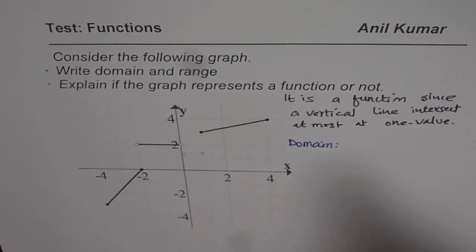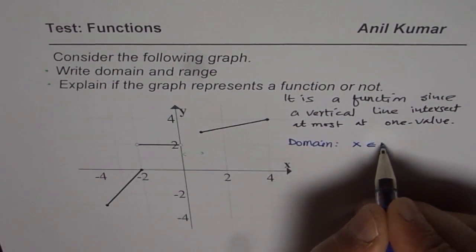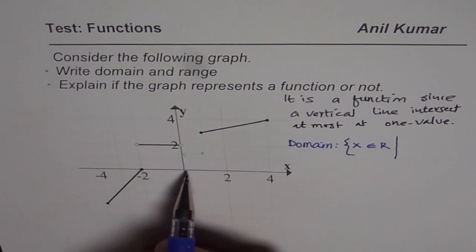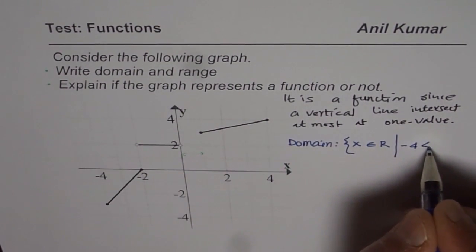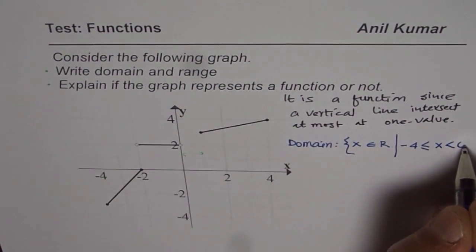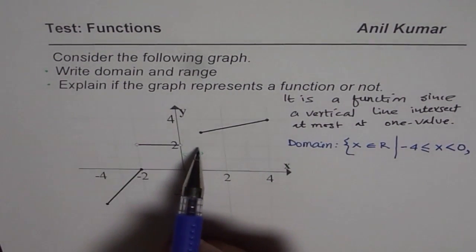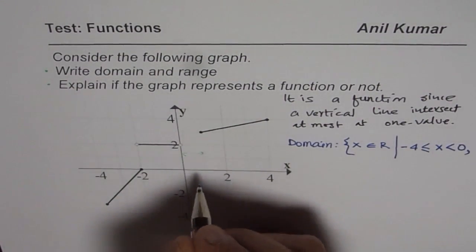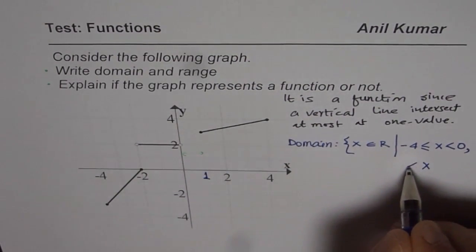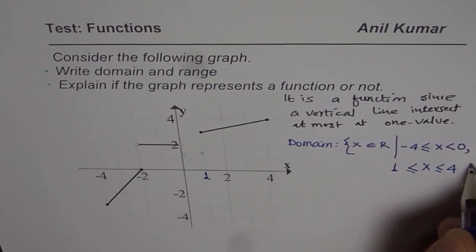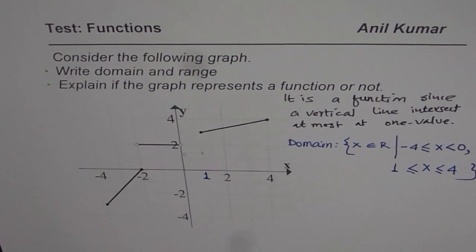So you can see that the domain of the function is x belongs to real numbers, where x is from minus 4 to 0, where minus 4 is included but 0 is not included. So it is from minus 4, which is included, filled in circle, to 0. And after a gap, so whenever there is a gap, you can write comma or union to represent the next interval. So the next interval is from 1 to 4, it is x greater than or equal to 1 and less than or equal to 4. So that becomes the domain for this function.